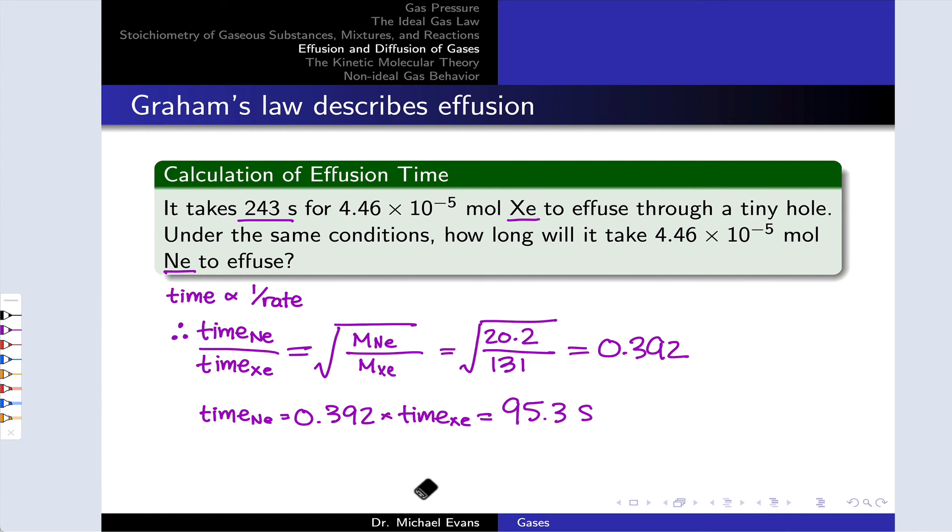95.3 seconds is less time, faster rate of effusion than 243 seconds. And this makes sense if we think through the relative molar masses of xenon and neon. Neon is lighter, and so its time to effuse should be shorter than that of xenon. And indeed, that's what our calculation is suggesting.